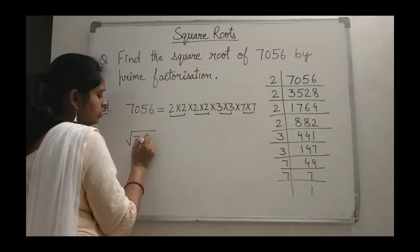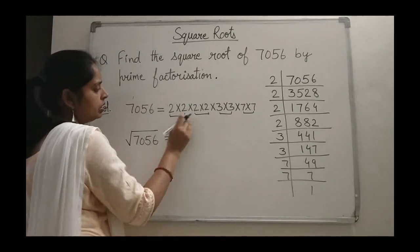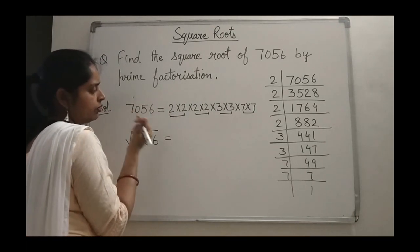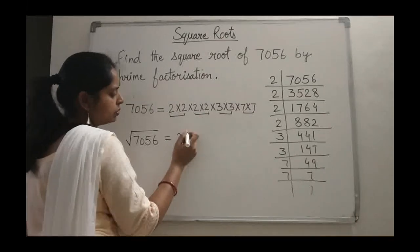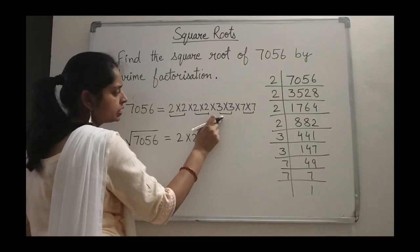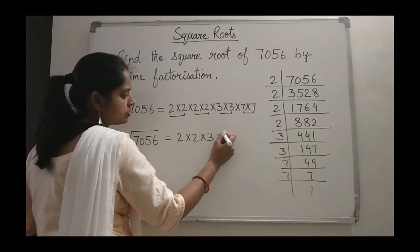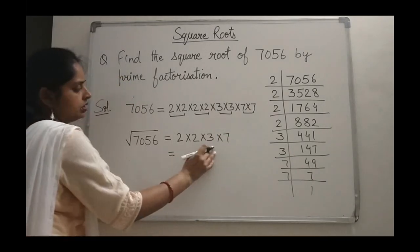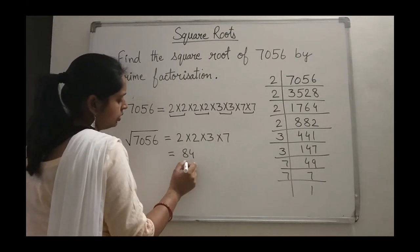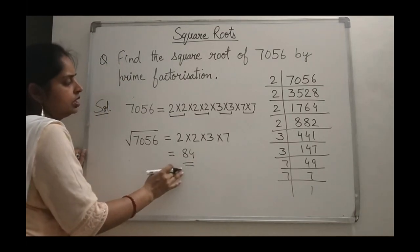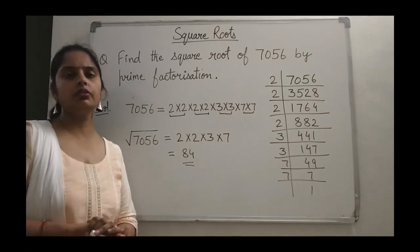To find the square root of 7056, from each pair we take only one term. We get 2 × 2 × 3 × 7 = 84. So the square root of 7056 is 84. These are the types of questions we will solve to find the square roots of different numbers.